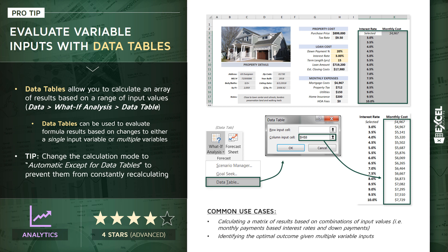Common use cases include calculating a matrix of results based on combinations of input values — like monthly payments based on things like interest rates and down payment amounts. Or taking that even a step further, you could use this tool to identify the optimal outcome given multiple combinations of variable inputs. So let's go ahead, open up our pro tip workbook, roll up our sleeves, and practice building some of these data tables.